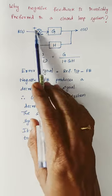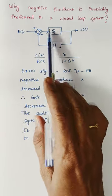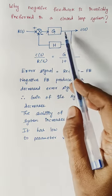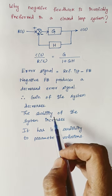Here we are doing a subtraction, therefore the overall gain of the system gets reduced. Whenever the gain of the system gets reduced, it automatically increases the stability of the system.